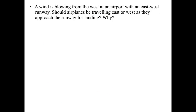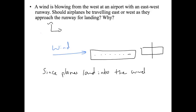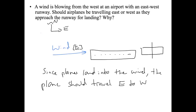A wind is blowing from the west at an airport with an east-west runway. Should airplanes be traveling east or west as they approach for landing? Planes always land into the wind so as to slow their descent. Since the wind is blowing from the west — meaning it blows eastward — the plane should travel east to west to land into the wind.